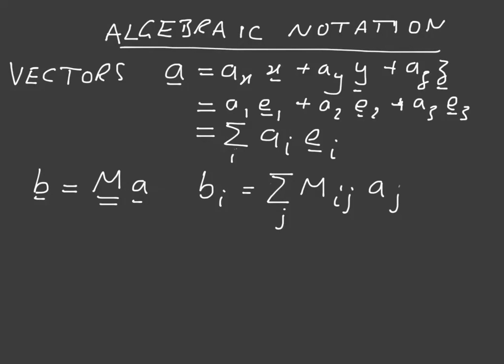For quantum mechanics, we use a slightly different notation. For the vector, we're going to write psi, and we're going to write it inside an angled bracket like this. This is called a ket. You can see more about this in videos on Dirac notation.